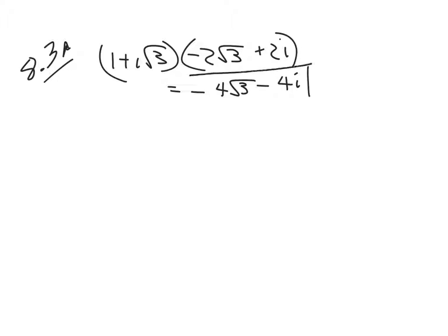At this point we have taken things like 1 plus i square root of 3, and multiplied it by negative 2 square root of 3 plus 2i. We use the FOIL method and come up with an answer like negative 4 square root of 3 minus 4i. I'll leave that up to you to use the FOIL method to come up with that answer.